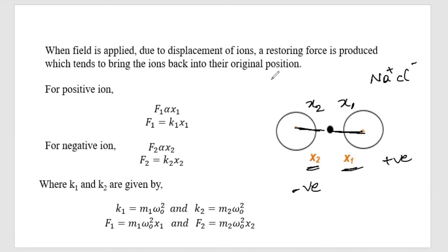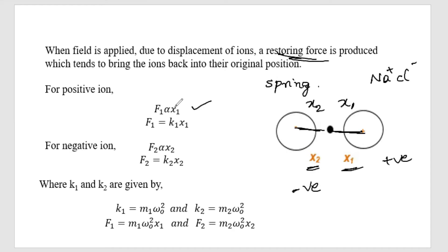This system acts like a spring. We apply the concept of restoring force, which is proportional to displacement. So F1 is proportional to X1, with proportionality constant K1, where K1 equals M1 times omega-naught squared.